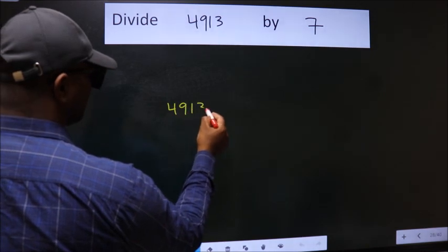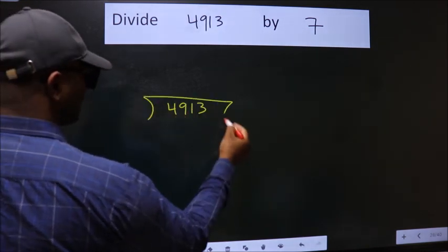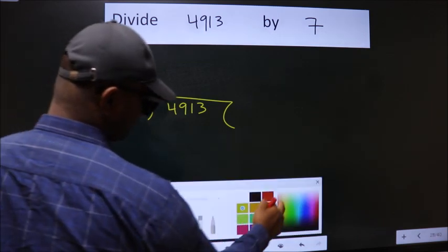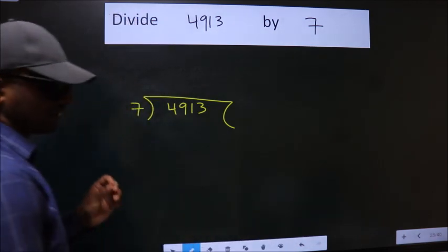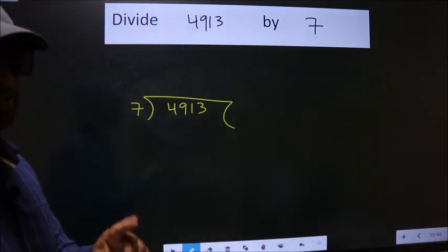4913 here, 7 here. This is your step 1. Next.